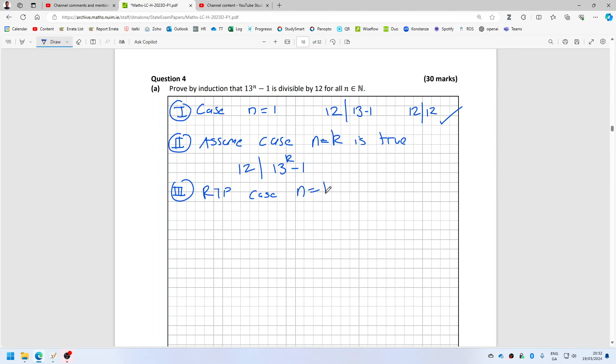So we want to prove that 12 can be divided into 13 power k plus one minus one. That's equal to... 13 power k plus one can be changed into 13 times 13 to the k minus one. And that 13 can be changed into 12 plus one times 13 power k minus one.